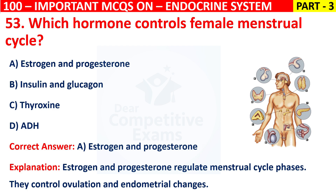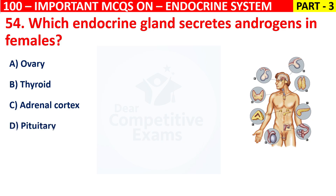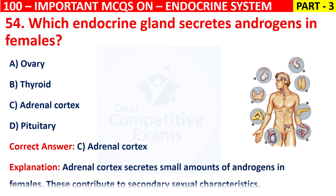Question number 54: Which endocrine gland secretes androgens in females? Your options are Ovary, Thyroid, Adrenal cortex, or Pituitary. The correct answer is C, that is Adrenal cortex. The adrenal cortex secretes small amounts of androgens in females. These contribute to secondary sexual characteristics.